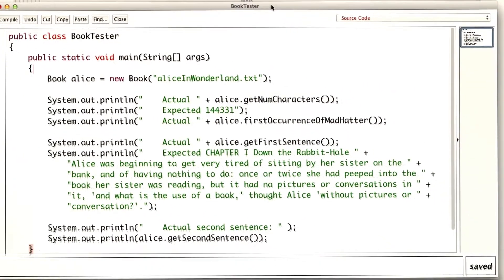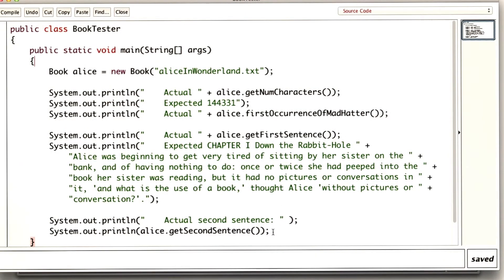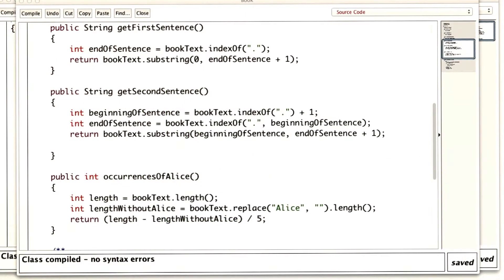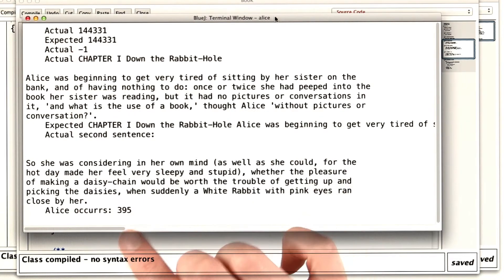Let's add a line to our book tester to see how many times Alice actually occurs. And if we run the main method again, it now tells us that Alice occurs 395 times.